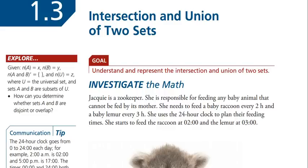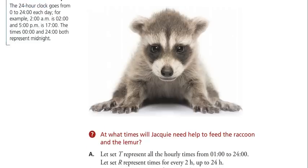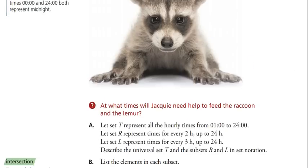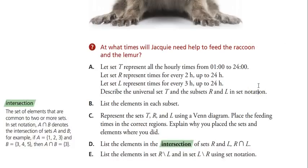Jackie is a zookeeper responsible for feeding any baby animal that cannot be fed by its mother. She needs to feed a baby raccoon every 2 hours and a baby lemur every 3 hours, using a 24-hour clock. We want to find at what times Jackie will need help — when is there going to be an overlap in feeding times? We let set T represent all hourly times from 1 to 24.